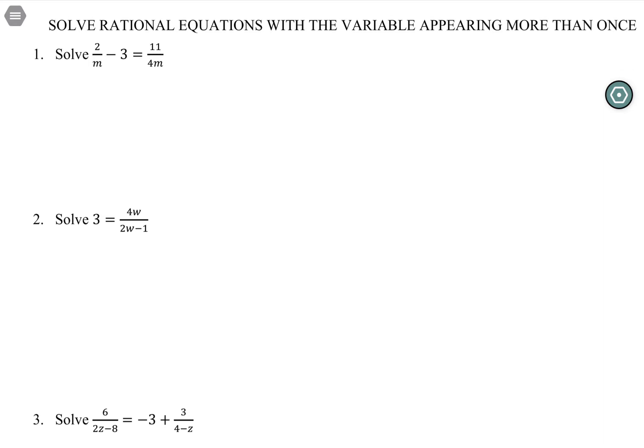So really the strategies are the same for all of these. There might be some special step that we have to do to free up our variable based on the type of equation, but our goals are always free your variable from parentheses, fractions, radicals. Move your variable to one side and combine, hopefully getting down to a single variable and then reverse order of operations.